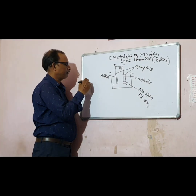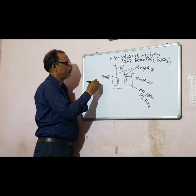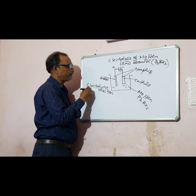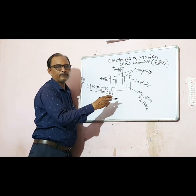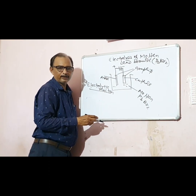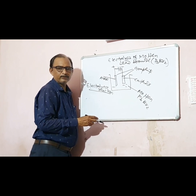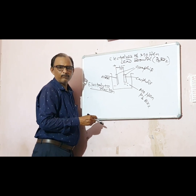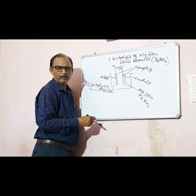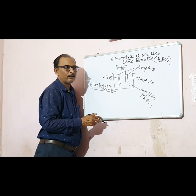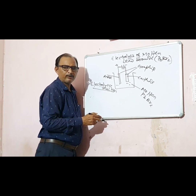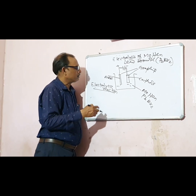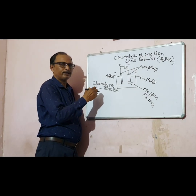Electrolytic reaction. You can also write down electrolytic dissociation and ionization. I told you the difference — when an ionic compound forms ions, that is ionization. But when an electrovalent compound separates into ions, that is called dissociation. Better you write down electrolytic reaction.